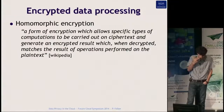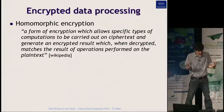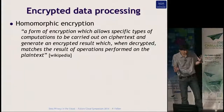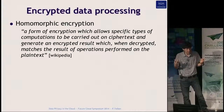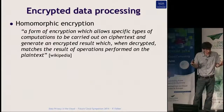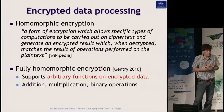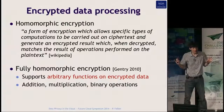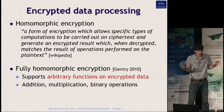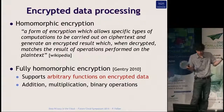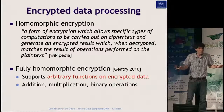On homomorphic encryption: the idea is you encrypt data in a specific way and can do computations on the ciphertext that produce a result, also as ciphertext. When you decrypt the result, you get the same answer as if operations had been performed on the plaintext. Fully homomorphic encryption was really introduced in 2010, so it's quite recent. It supports arbitrary operations — additions, multiplications, binary operations — and by composing these low-level operations you can build any high-level function.